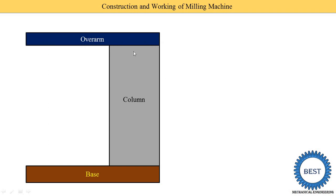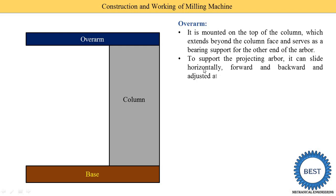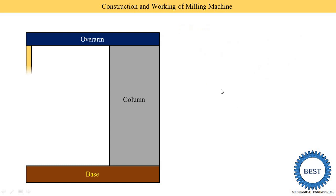The overarm is mounted on the top part of the column and extends behind the column — it is larger than the column width behind the column face. It serves as a bearing support for the other end of the arbour. To support the projecting arbour, it can slide horizontally forward and backward and be adjusted at the required position.